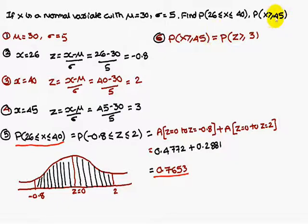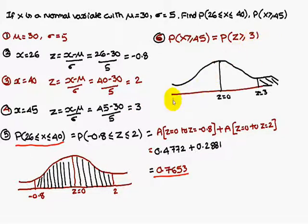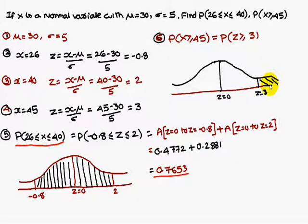Similarly, probability of X greater than or equal to 45 — we convert the value in terms of Z. Substituting Z in place of X, we get Z greater than or equal to 3 since the Z value for 45 is 3. Consider a bell-shaped curve, place Z equal to 3 on the right-hand side. Z greater than or equal to 3 represents the tail area we need to find.